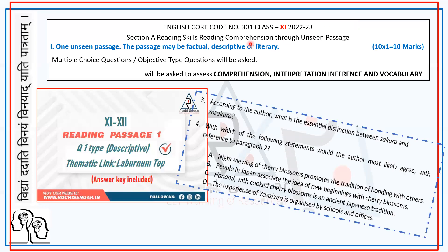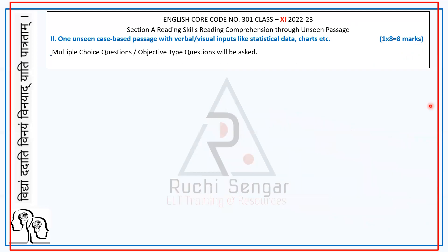It's a descriptive passage and the questions here cater to these competencies. I'm showing you two, but there are 10 questions in total, each with a different competency. Remember that even vocabulary is inference-based — it's not a direct pick. Okay, let's move on to the second type for class 11.